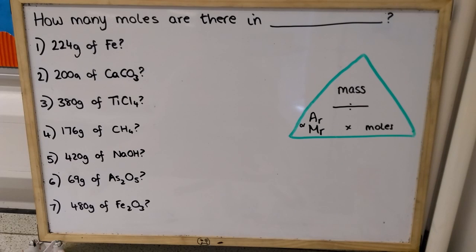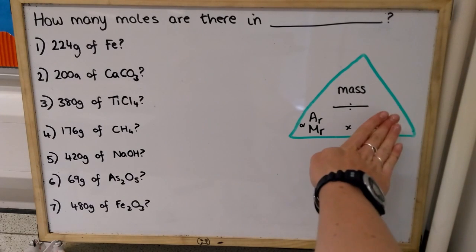So this second type of question is basically the opposite of the first type of question. Again, we've got the same formula triangle there, but now we're trying to work out how many moles of a certain substance are there in a known mass. So since I'm trying to work out the number of moles, that's what I'm going to cover up.